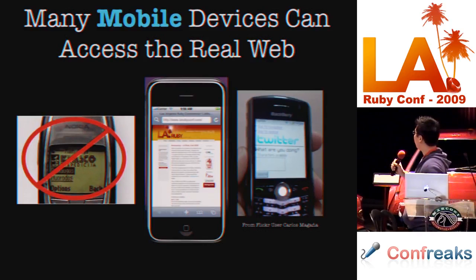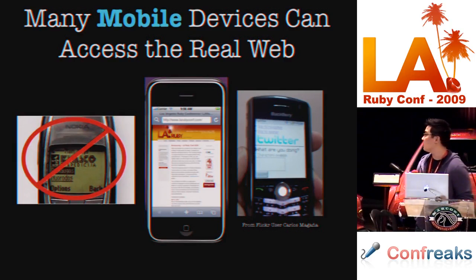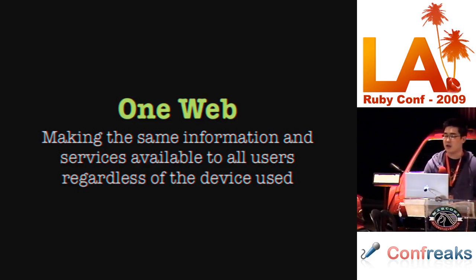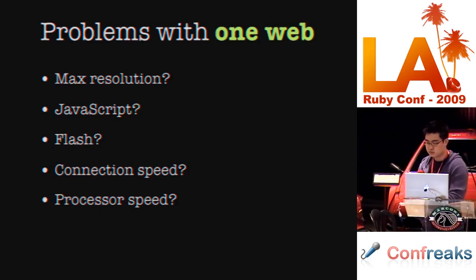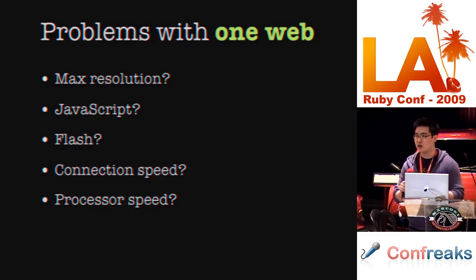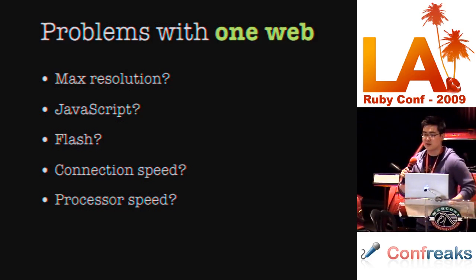Many mobile devices can access the real web. We're talking about devices that can actually hit HTTP and aren't limited to WAP pages. So, OneWeb is essentially trying to make the same information and services available to all users regardless of what device they're using. It's a tough thing to do. Some problems with OneWeb include: resolution — different screen sizes; JavaScript and Flash — not all phones support that; and connection speed and processor speed — you want to minimize what the device has to load.